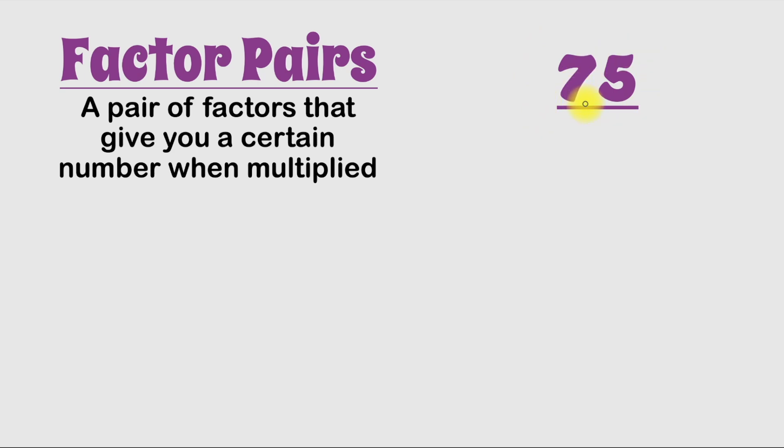In order to find those factors, we're going to use something called factor pairs. And factor pairs are a pair of factors that give you a certain number when multiplied. So basically, we're going to find two numbers that we can multiply to get 75.